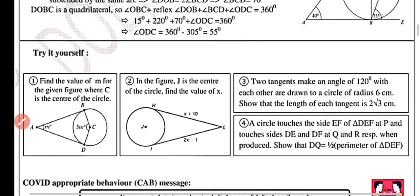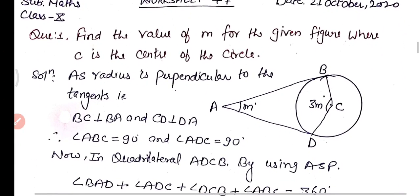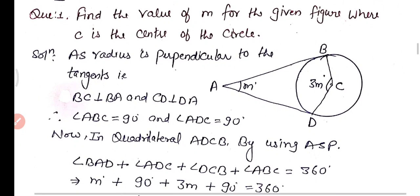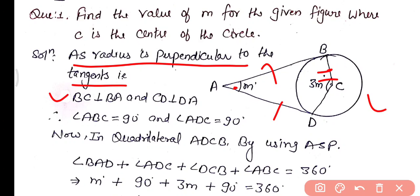Practice question one: find the value of angle m for the given figure where C is the center of the circle. AB and AD are tangents, angle A equals m, and angle BCD equals 3m. Since radius is perpendicular to the tangent, angle ABC and angle ADC each equal 90 degrees.